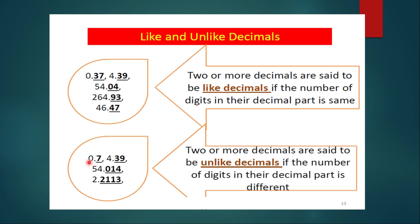Now let us see the next example. Here we have 0.7, 4.39, 54.014, and 2.2113. As you can see, the first has one digit in the decimal part, the second has two digits, the third has three digits, and the fourth has four digits. No number has the same number of digits in the decimal part, so these are known as unlike decimals. The definition: two or more decimals are said to be unlike decimals if the number of digits in their decimal part is different.